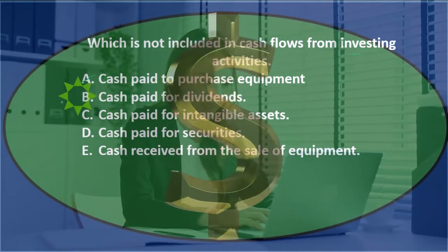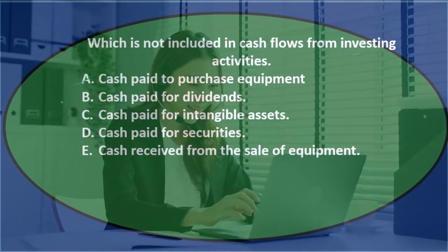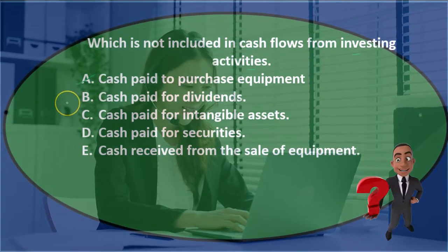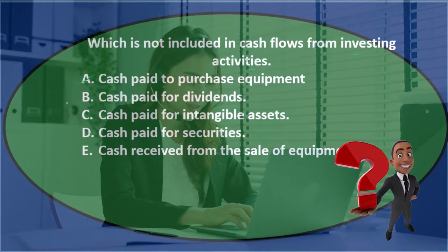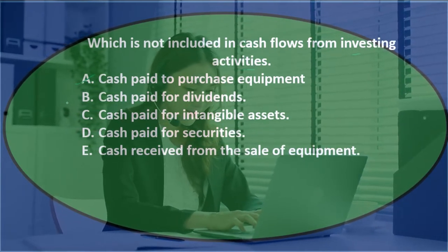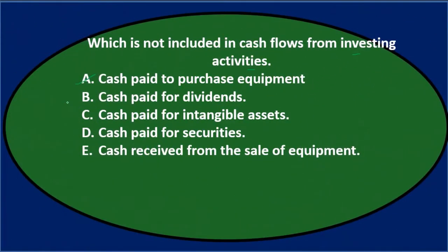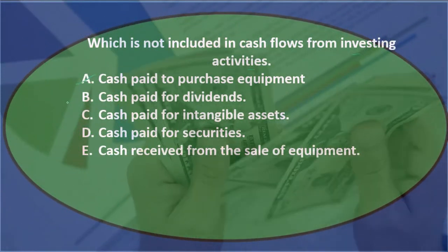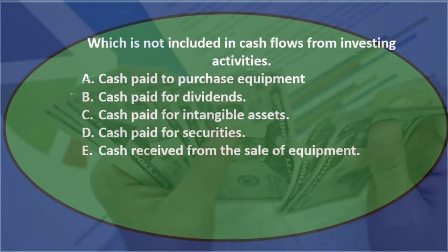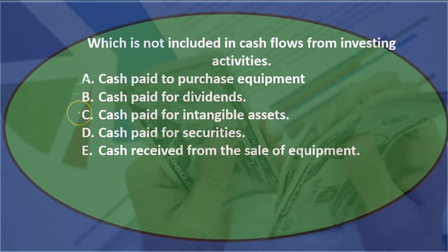Option B: cash paid for dividends. The journal entry would be to debit retained earnings and credit cash. Is there an income statement account? No — no revenue or expenses. Did we buy anything of substantial value? No — we're just giving money back to the owners. Therefore this doesn't look like investing or operating, but financing. So paying dividends looks like a financing activity. That looks like a good answer; we'll keep that for now.